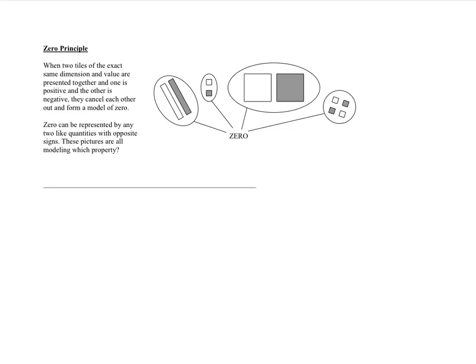Please take a second, pause the video, and read these 2 paragraphs to yourself. Don't skip this step. Basically, if I have a positive x and a negative x together, that makes 0, because positive x plus negative x is 0. Same with any other shape — a positive x squared and a negative x squared make 0, and a negative 1 and a positive 1 make 0. This is illustrating the additive inverse property.